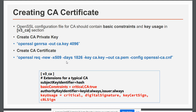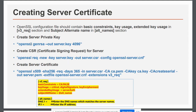Once we have created the private key and CSR for the server, the final step is to get the CSR signed by the CA created in step one. The command for that is 'openssl x509', which is a multipurpose command. We use SHA-256, set validity for 365 days, input the server.csr from step two, and it will be signed by the CA certificate and CA key from step one.